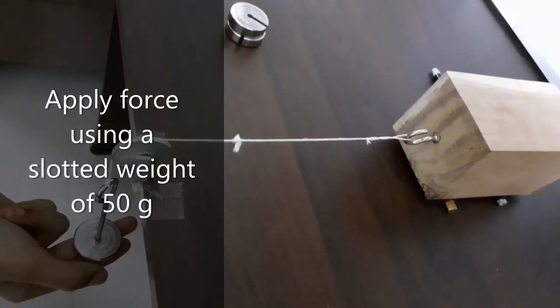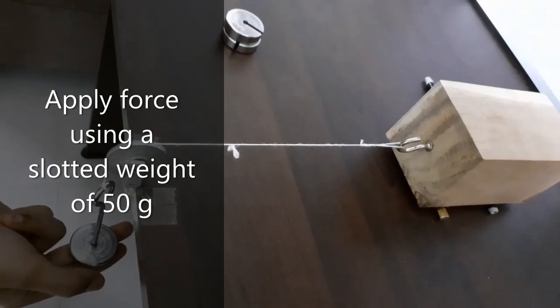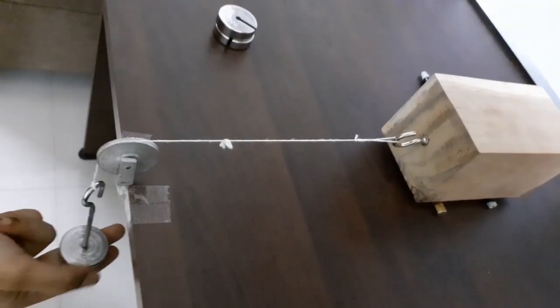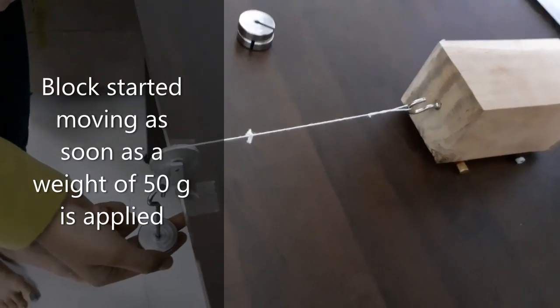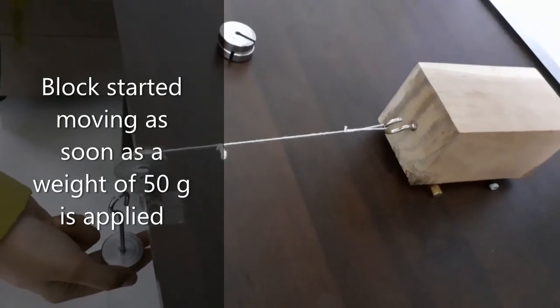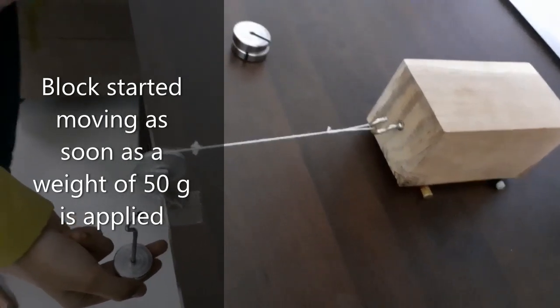Now the applied force is only 50 gram. And if I release my finger, let us see whether it will move or not. I am going to release my finger slowly, so that the 50 gram is applied on the block. And see, it is moving horizontally.